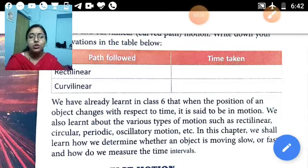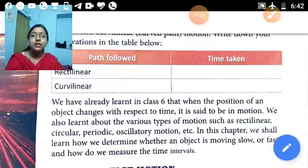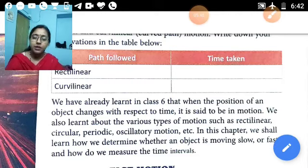So there are four types of motion: rectilinear motion, circular motion, periodic motion and rotational motion. So in this chapter, we shall learn how we determine whether an object is moving slow or fast and how do we measure the time intervals.